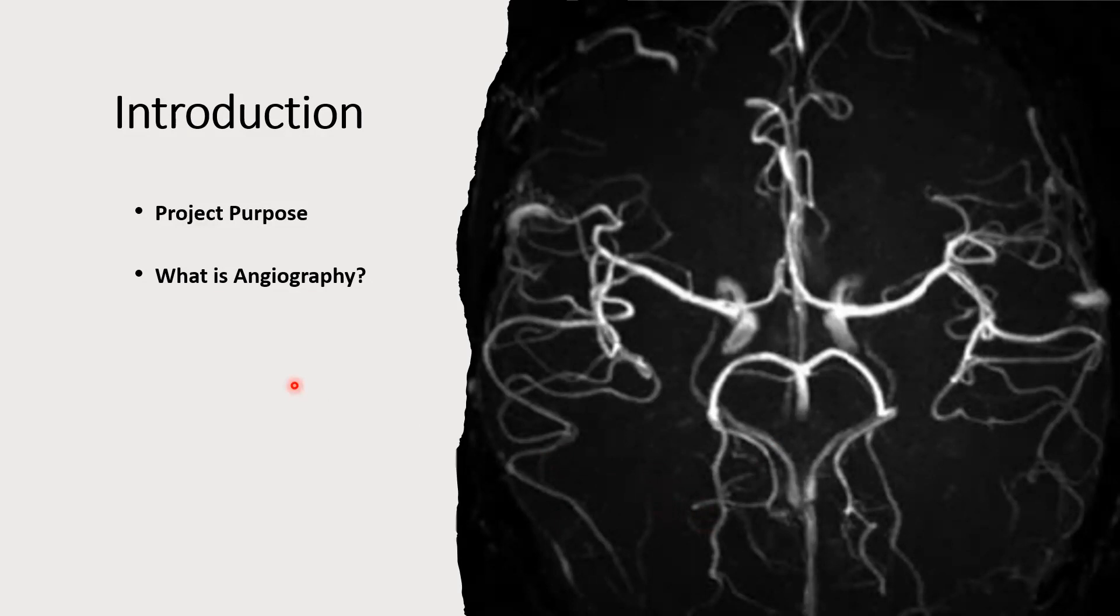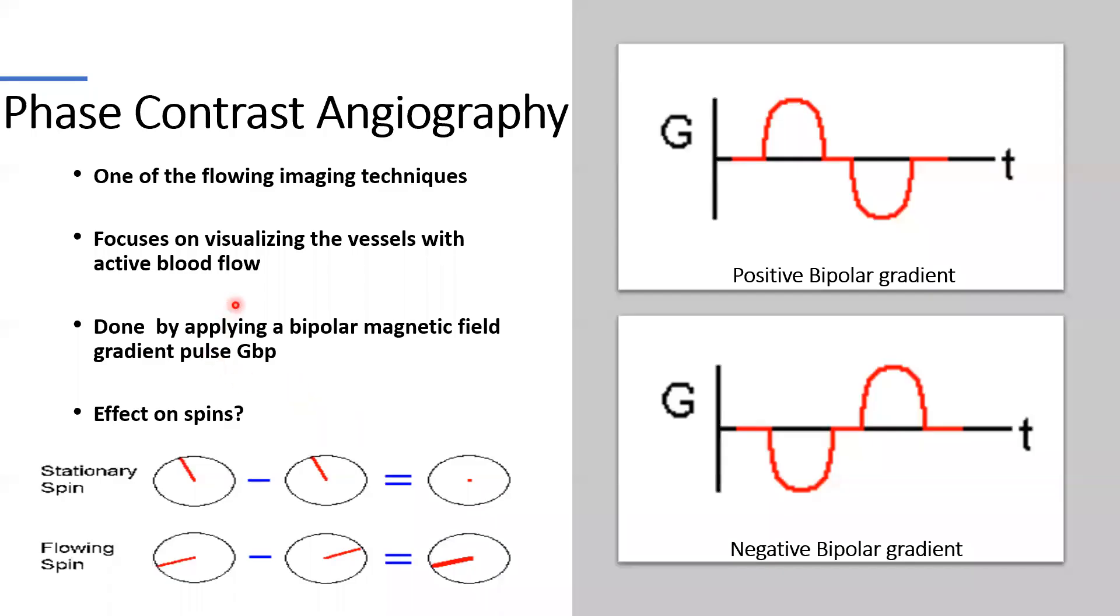Moving to the main topic, which is Phase Contrast Angiography. Phase Contrast Angiography is one of the flowing imaging techniques that is mostly used for brain angiographic studies and one of the neurologic magnetic resonance imaging techniques that focuses on visualizing the vessels with active blood flow.